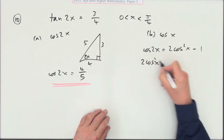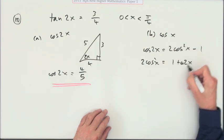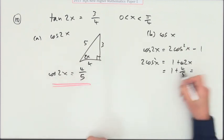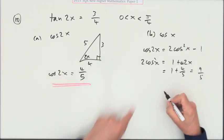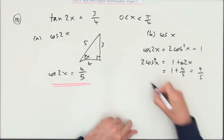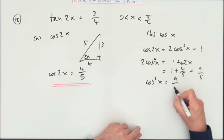2 cos² x will be—take that across—1 plus cos 2x. So that's 1 plus 4/5, that'll be 9/5. Now just work your way down to x. Divide by 2, so cos² x will be 9/10.